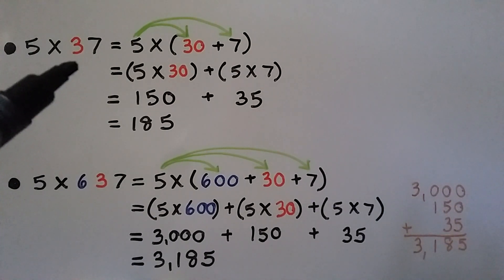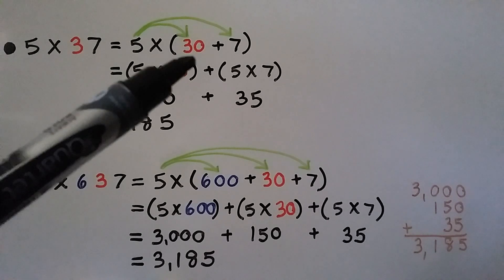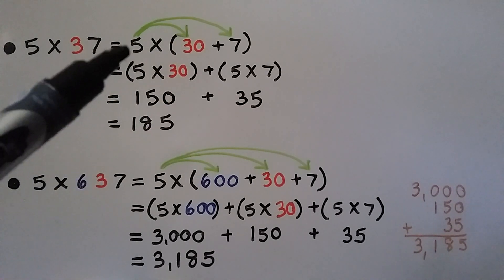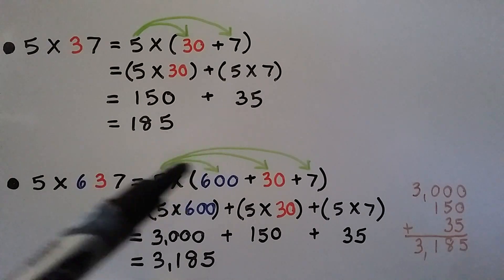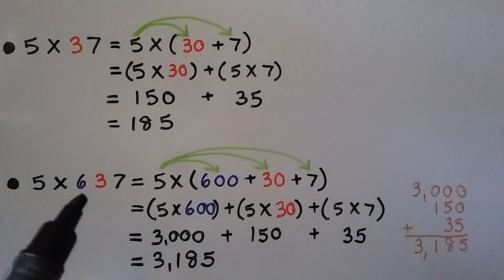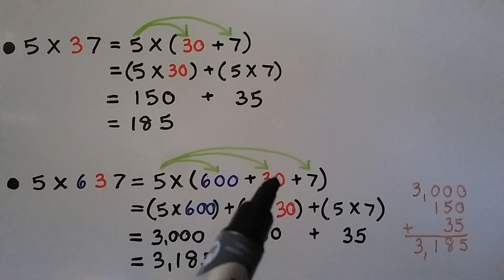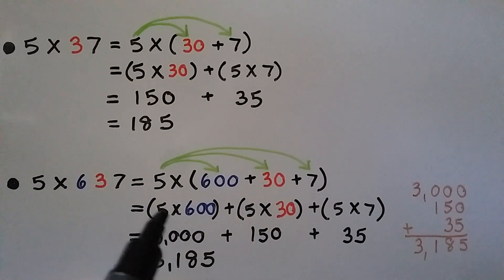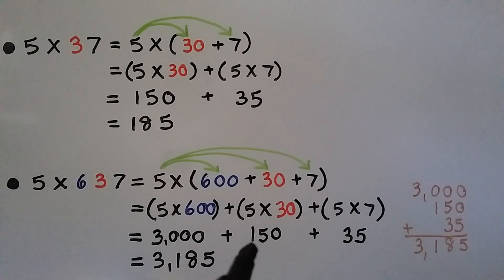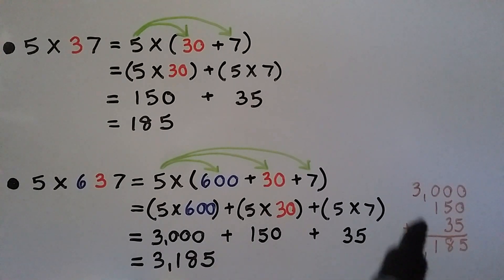For those who need it, a couple more quick examples. For 5 times 37, we break 37 into 30 plus 7. 5 times 30 is 150, and 5 times 7 is 35. We add them to get 185. For 5 times 637, we have 5 times 600, plus 5 times 30, plus 5 times 7, giving partial products that add up to 3,185.